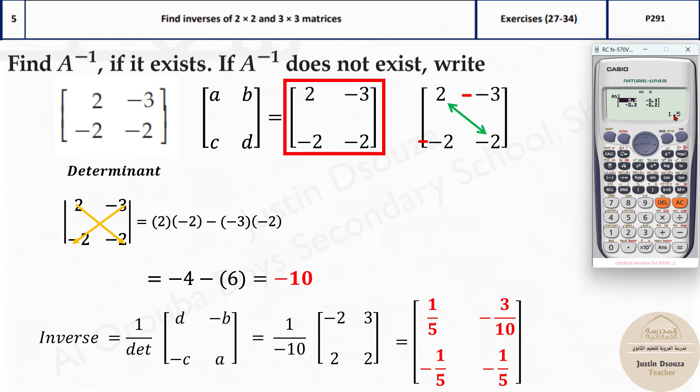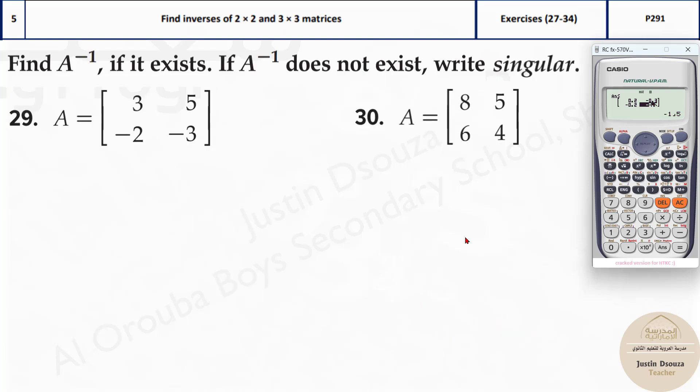It's 1, this is the fraction symbol, 1 by 5, minus 3 by 10, negative 1 by 5 and negative 1 by 5. That's the answers. So that's how we do it.